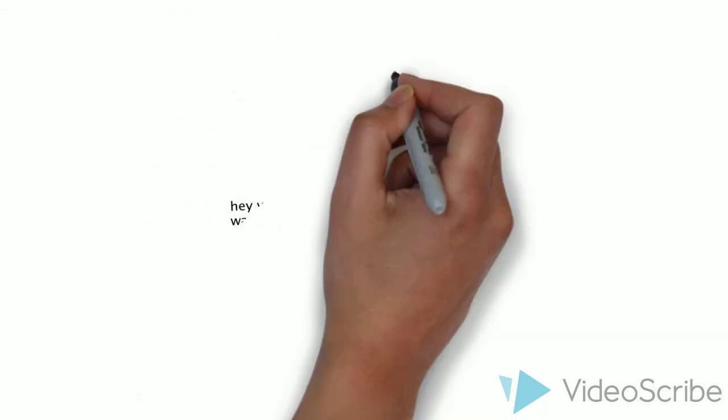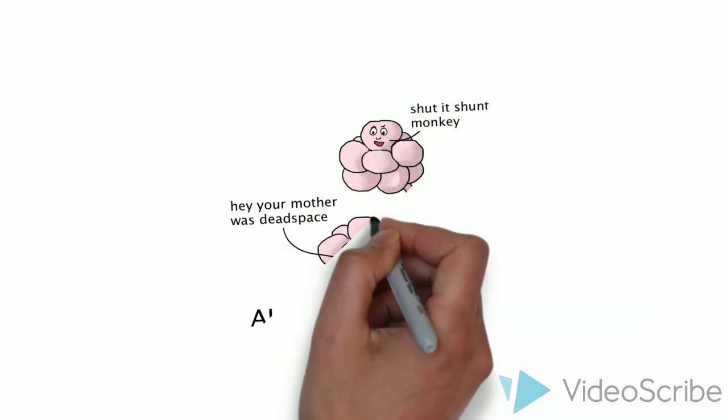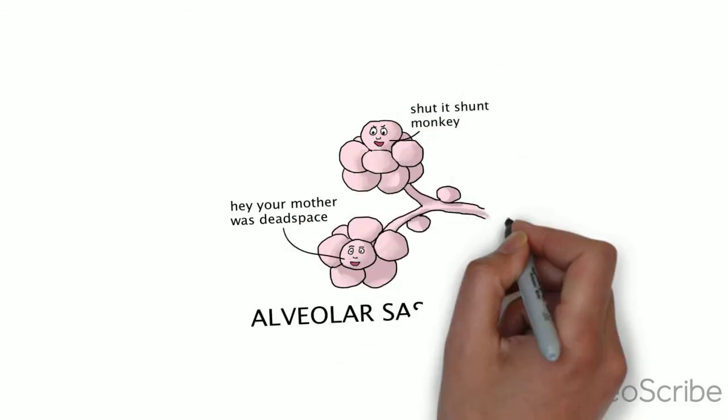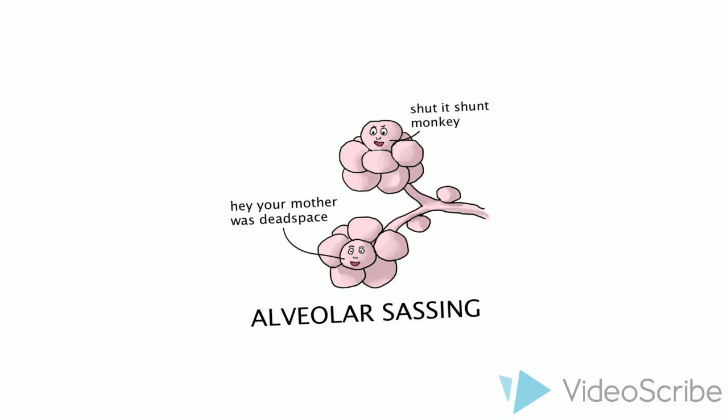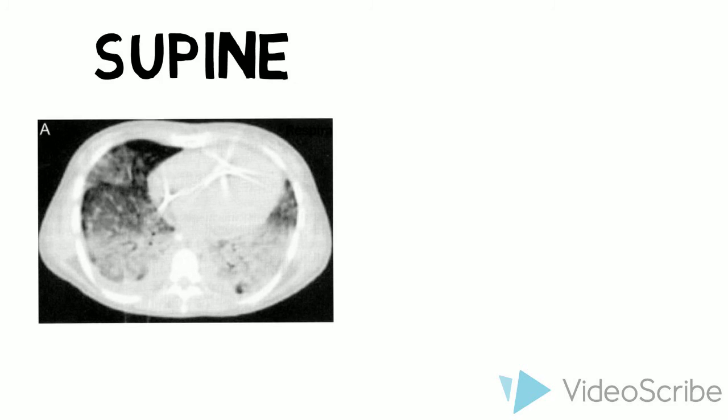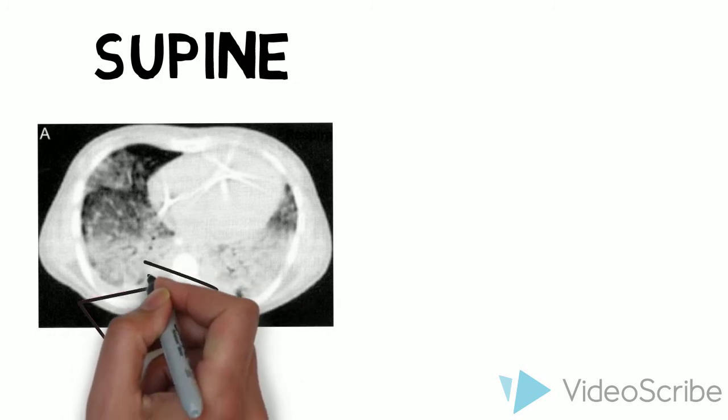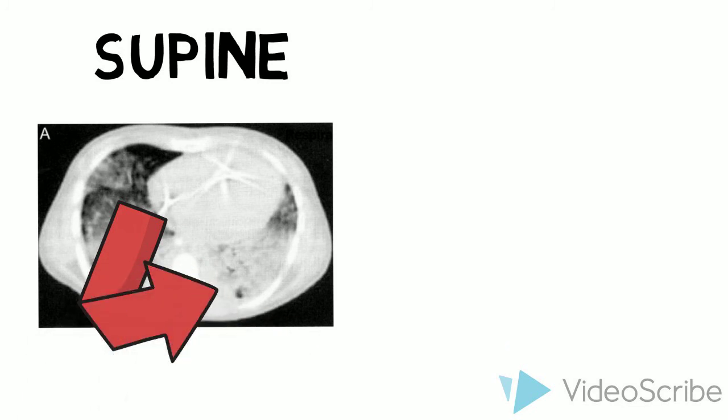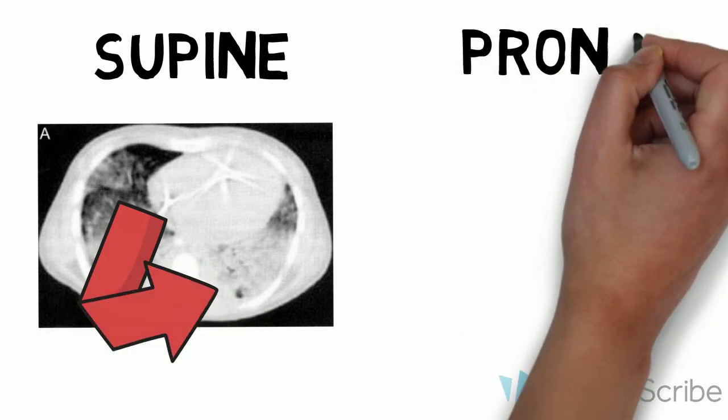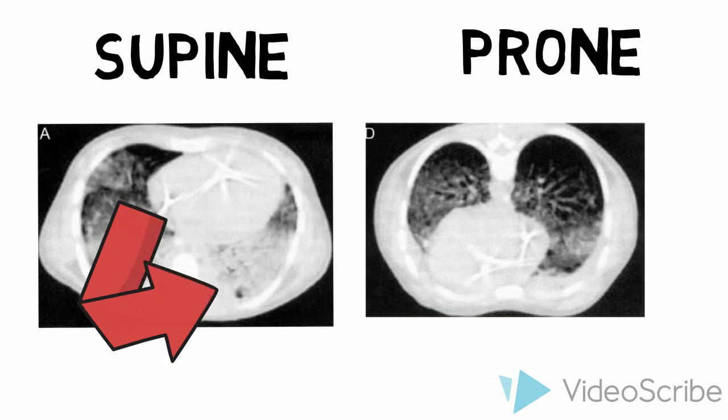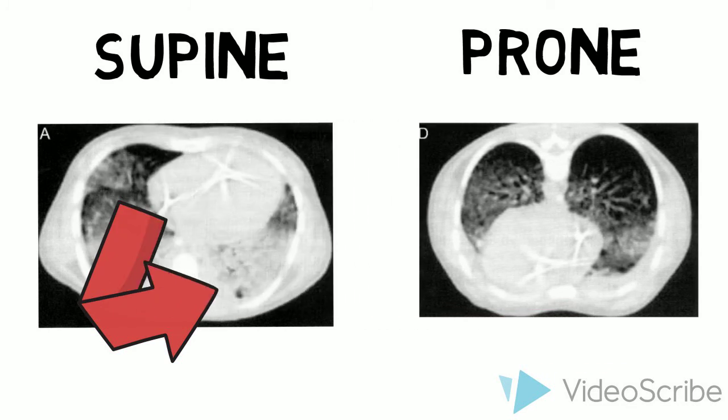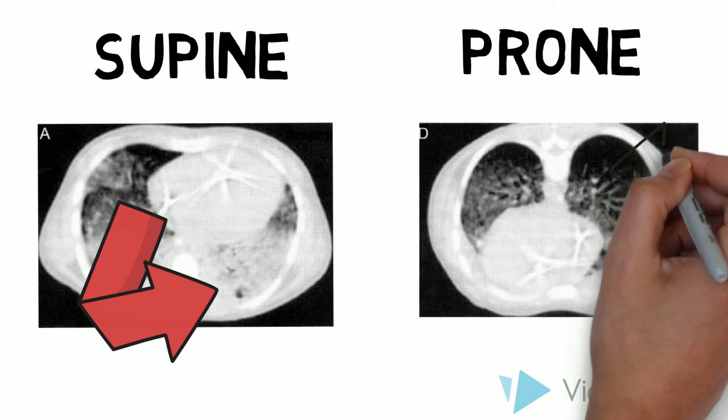The theory behind prone positioning is that because the lungs act as a sponge, having the heart and mediastinum inferior allows larger and more air-filled alveoli to be recruited. In this CT scan, you can see that with the heart on top, gravity pulls water downwards and creates a shunt with alveolar space. But with the heart below, in the prone position, you can see that a lot more air space is created on top.